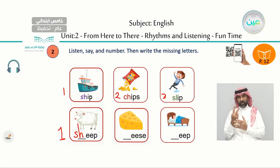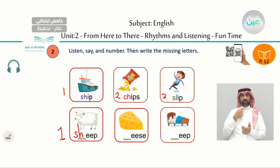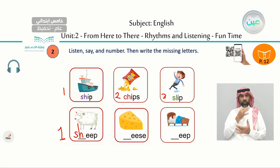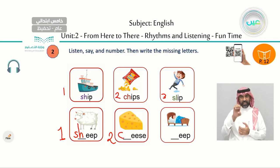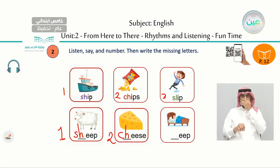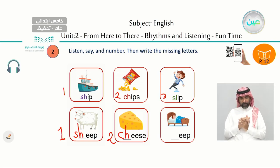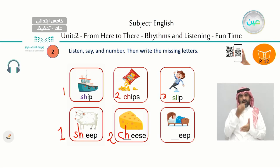Look at number two — cheese. Cheese. Sound number two. Letters — C and H. Excellent! C-H says ch, cheese. Cheese is a kind of food. That's good, excellent.